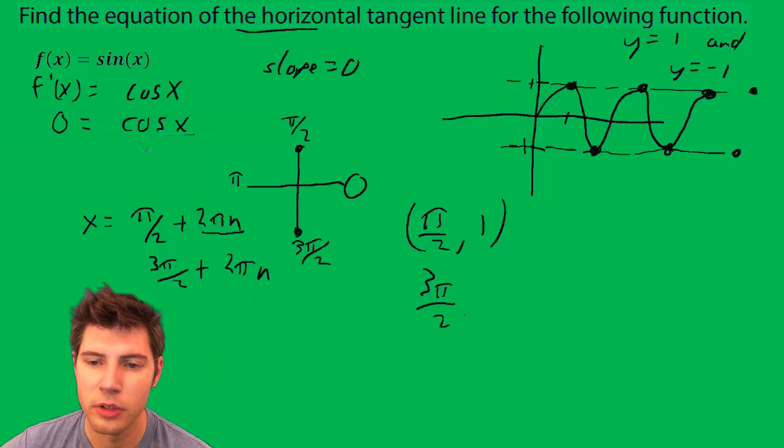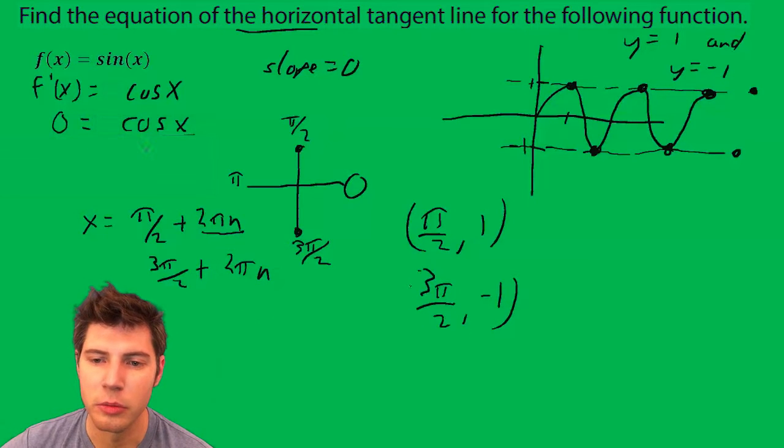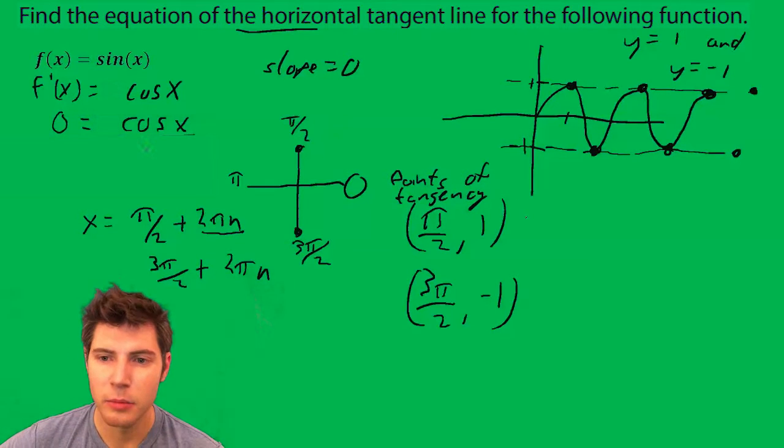And then this 3π/2 comma negative 1 will be my other point of tangency. So these are points of tangency.